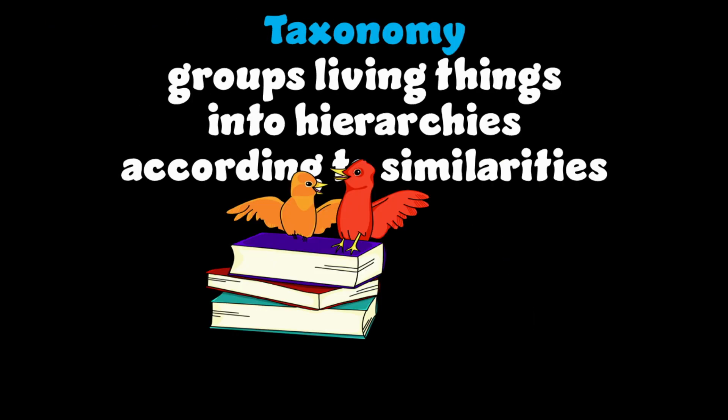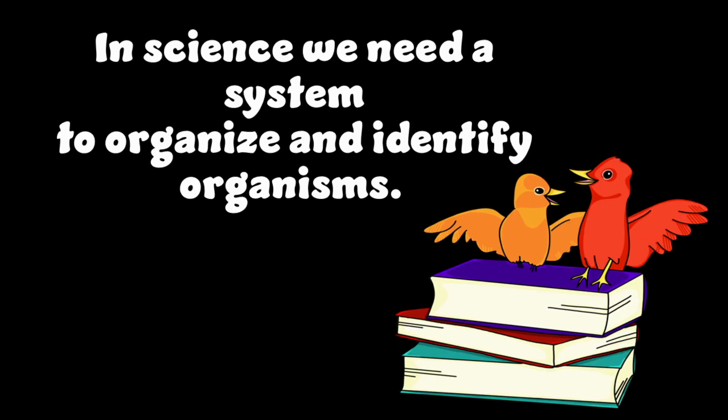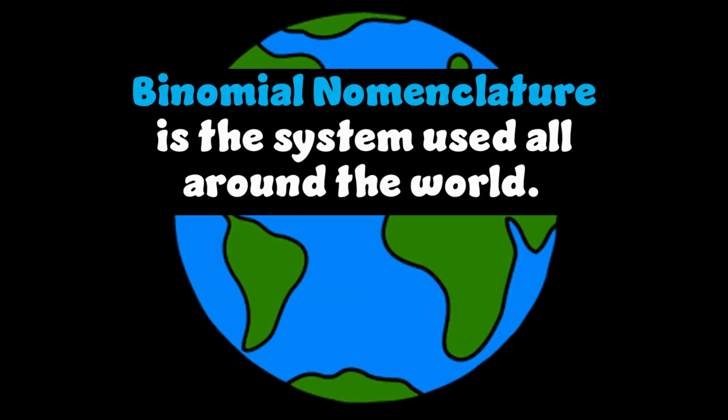Taxonomy groups living things into hierarchies according to similarities. Domain is the biggest taxon and there are three. Archaea and Eubacteria have one kingdom each. In science we need a system to organize and identify organisms — binomial nomenclature is the system used all around the world.